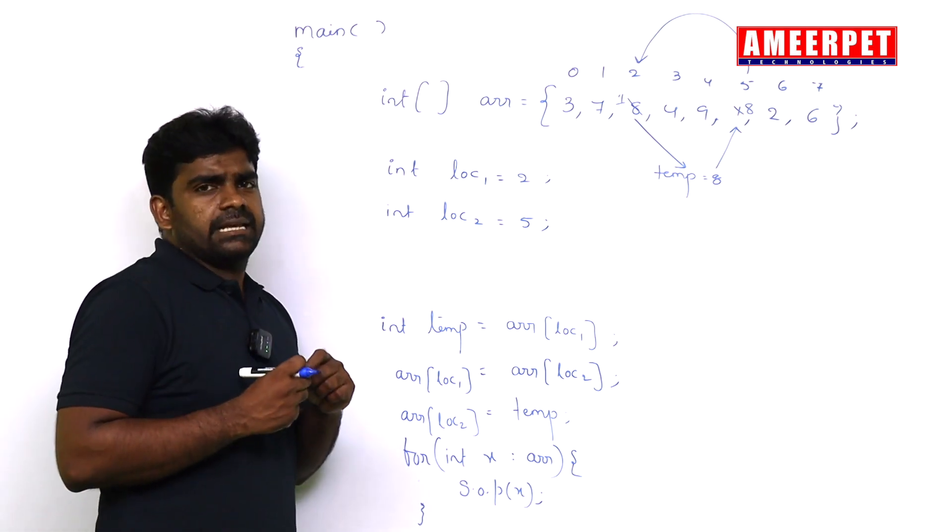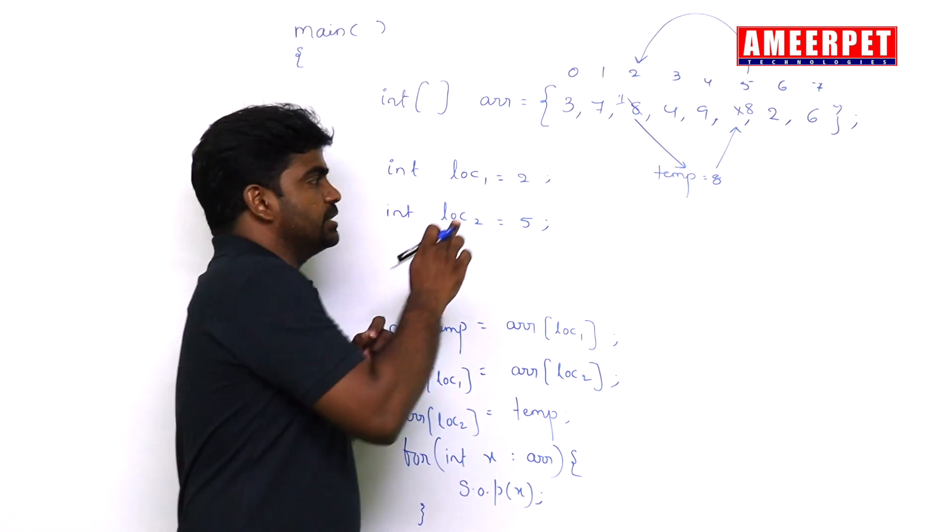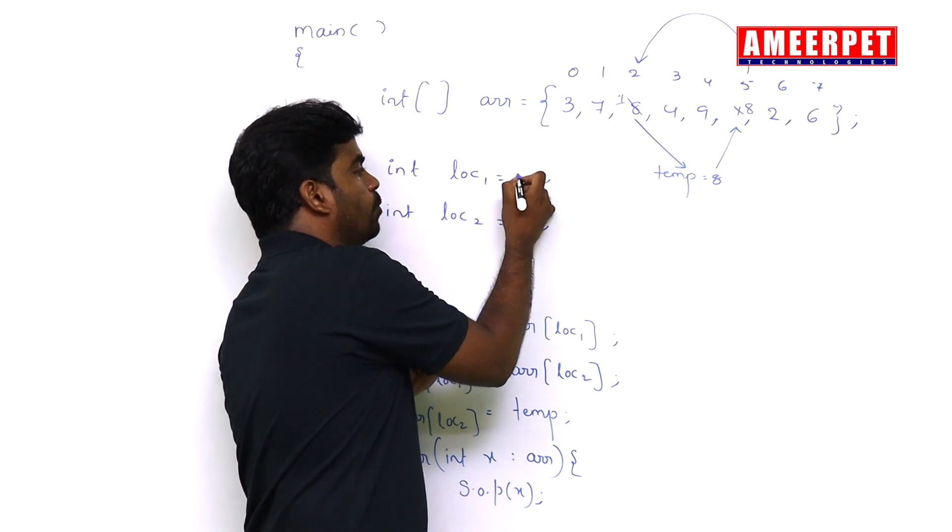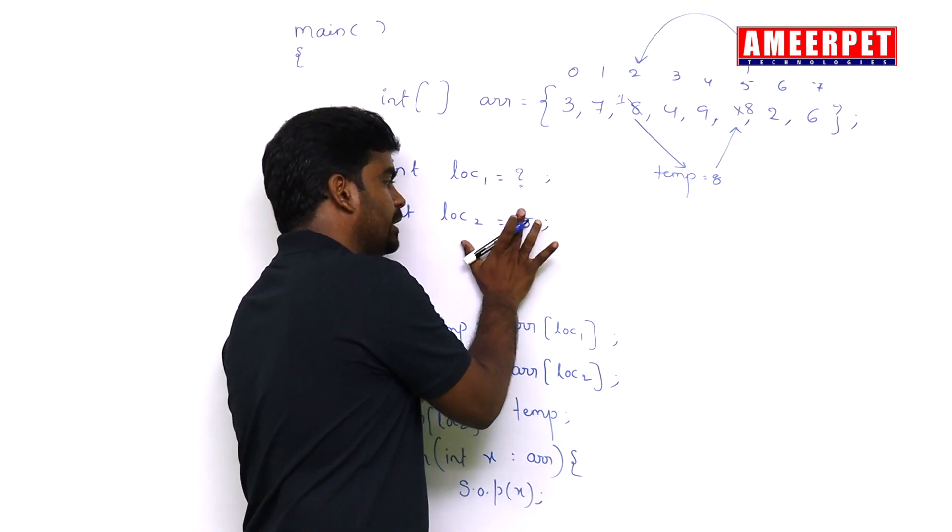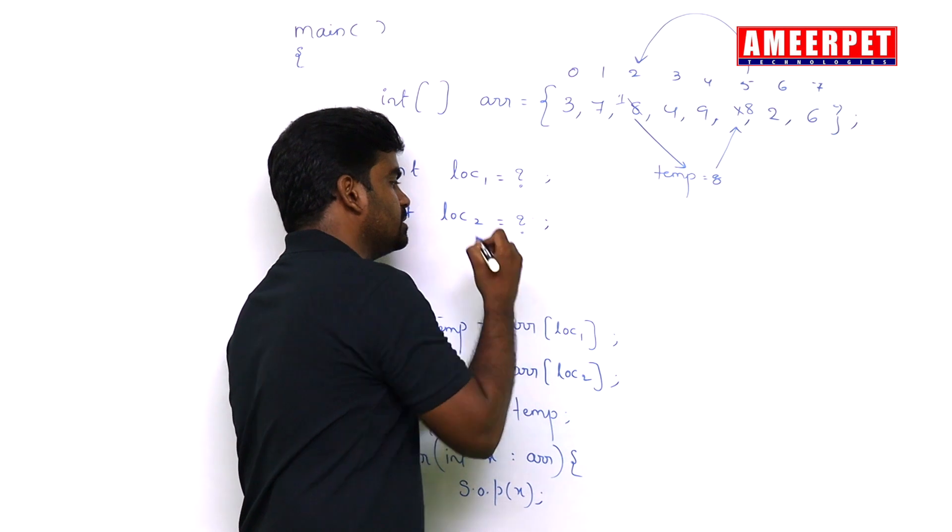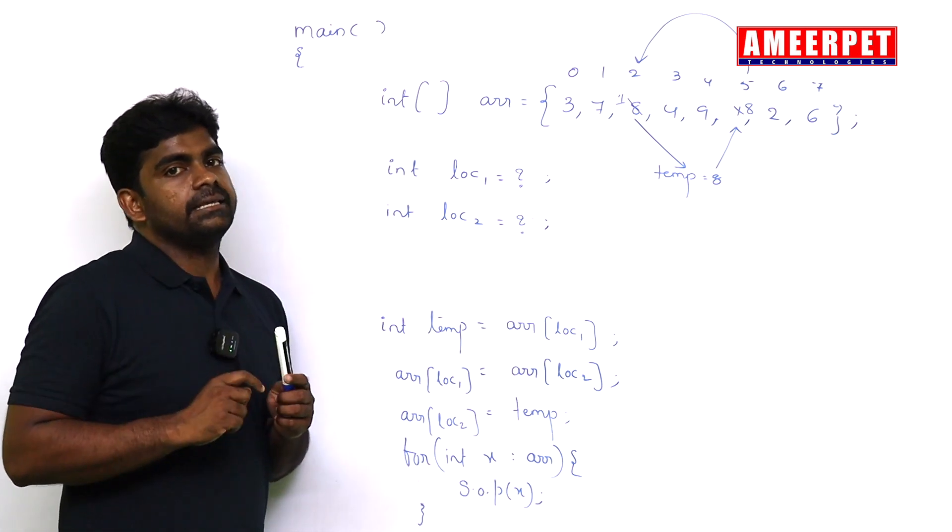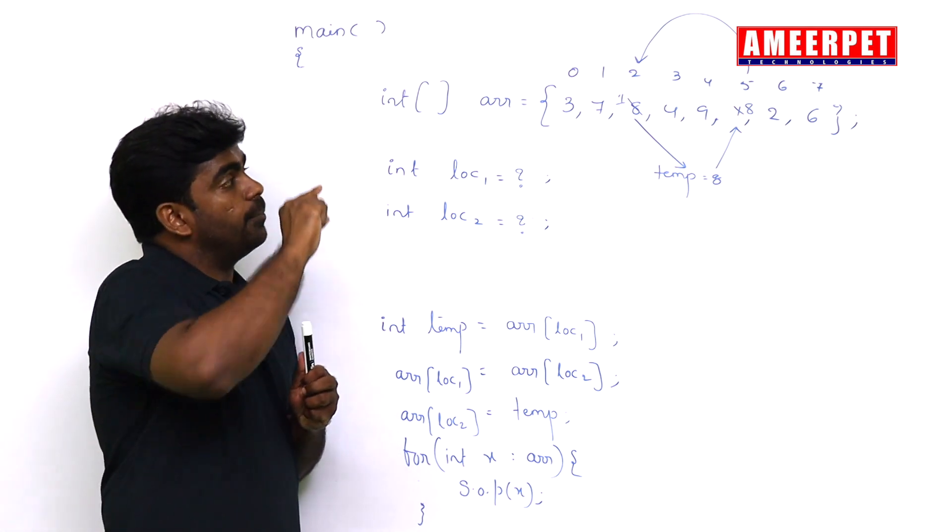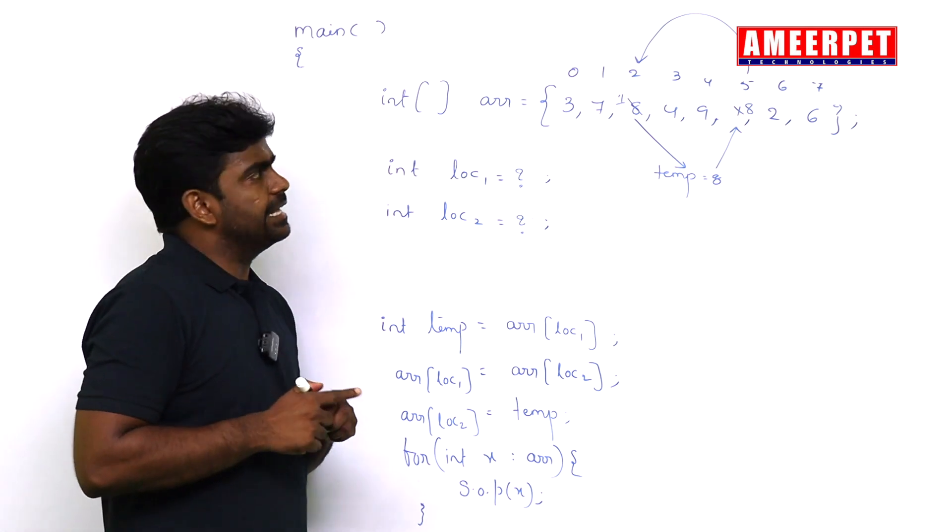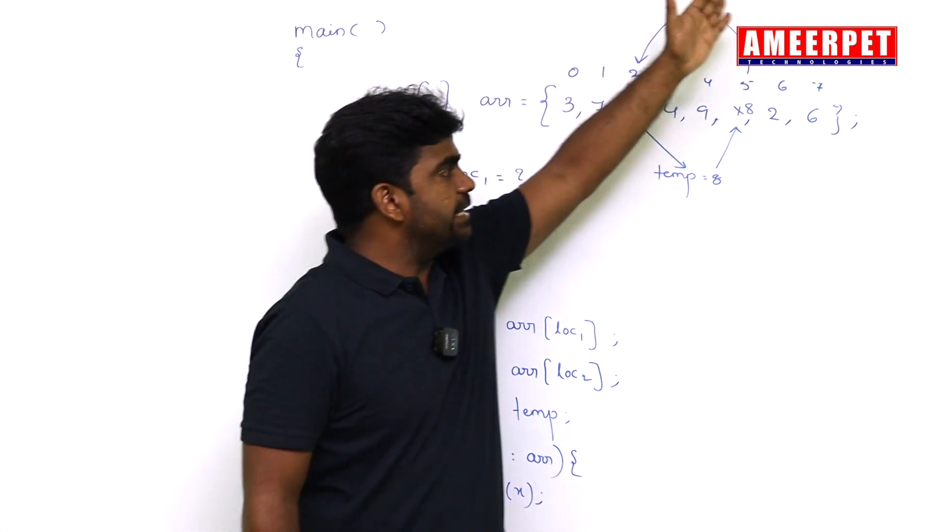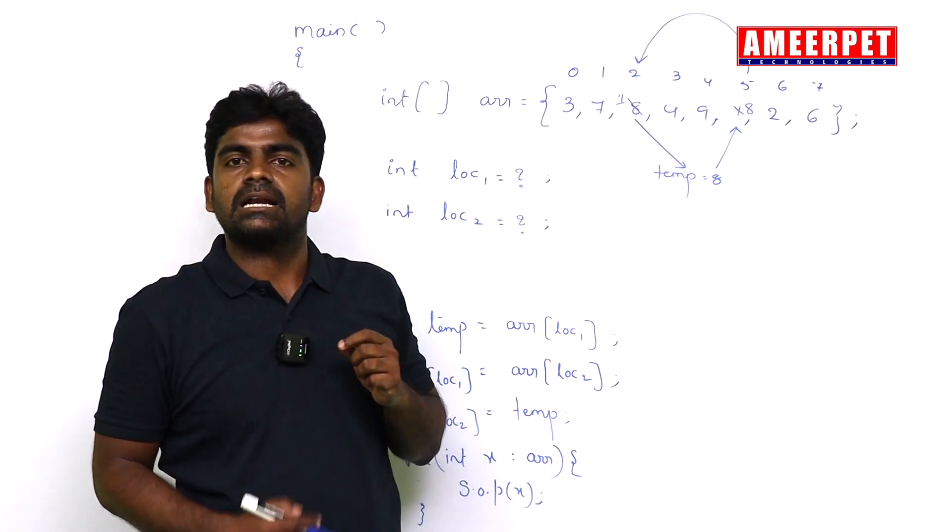Now question will come. For example, I want to read the locations. I don't know what is this location. I don't know what is this location. I'm not guaranteed that they will give valid locations only. They can give minus 3 or they can give 9 also. The locations are not present.